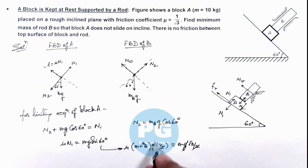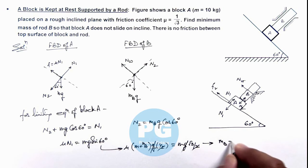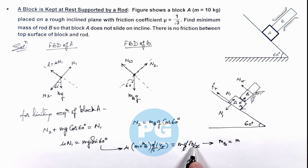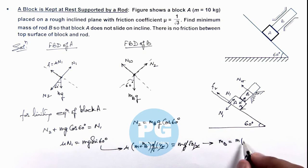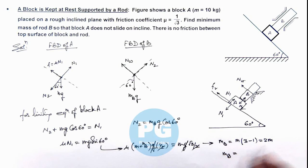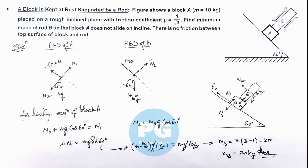Simplifying the relation, we get the value of Mb. Since mu is 1 by root 3, the expression simplifies: root 3 times (M plus Mb) times one-half equals M times root 3 by 2, giving Mb equals M times (3 minus 1) equals 2M. With M equal to 10 kilograms, the mass of rod B is 20 kilograms. This is the minimum mass required to keep block A in limiting equilibrium, at rest on the incline without sliding.